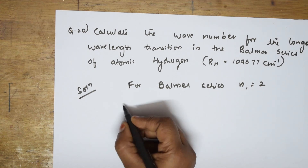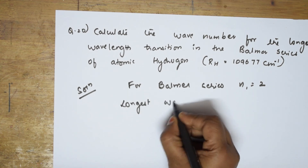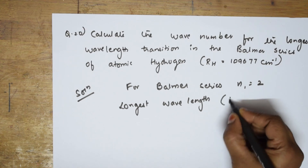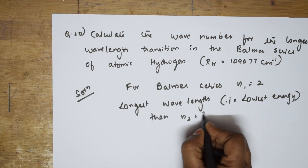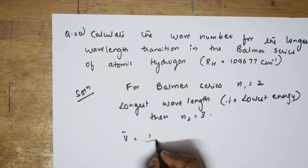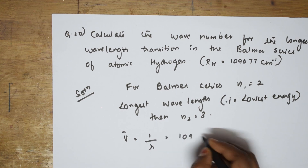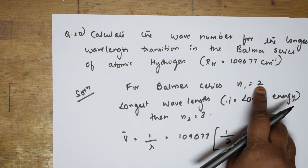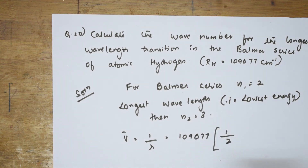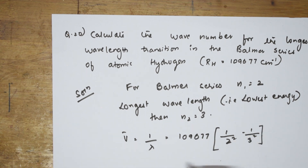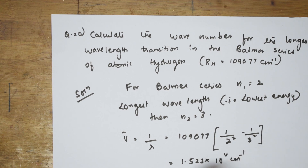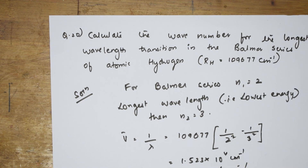If the line has the longest wavelength, it corresponds to the lowest energy, so N2 = 3. The formula is: ν̄ = 1/λ = 109677 × (1/2² − 1/3²). This gives 1/4 − 1/9, and solving the LCM gives 1.523 × 10⁴ cm⁻¹, which equals 5.23 × 10⁶ m⁻¹. This is your wave number, since it is the inverse of lambda.